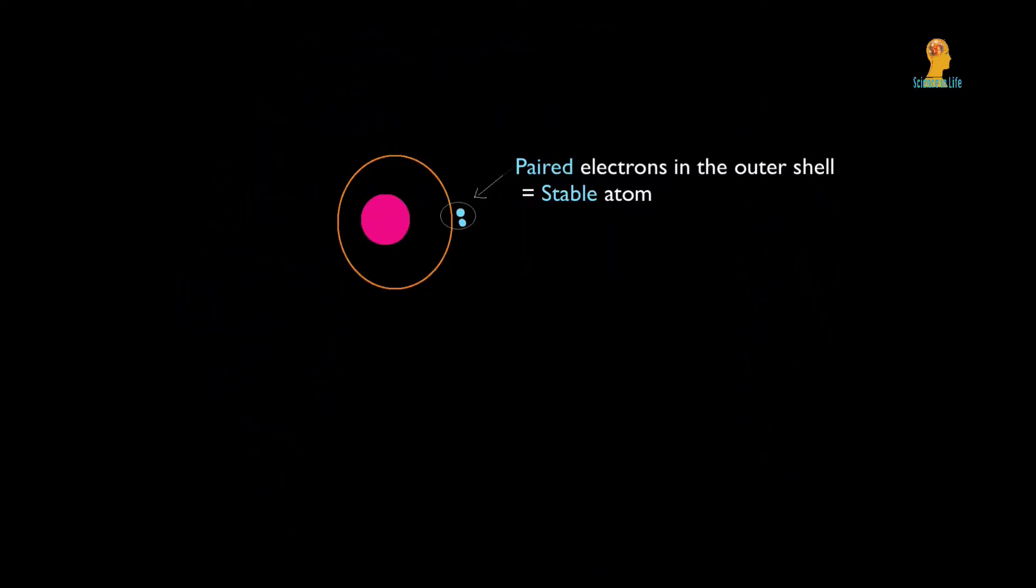Generally, if electrons are paired, they are happy. However, if an electron is not paired in an orbital, then the atom is considered to be unstable or reactive.